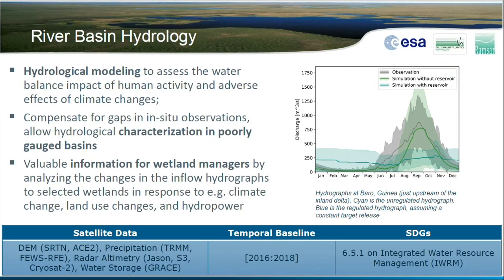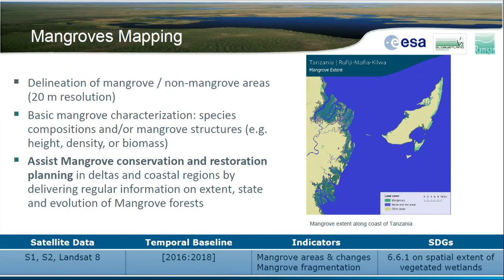River basin hydrology involves simulating or modeling discharge at a given point in the river — important information for wetland managers, but can also be used for things like flood forecasting and flood warnings. And finally, mangrove mapping — again a classification workflow specifically focused on mangroves.